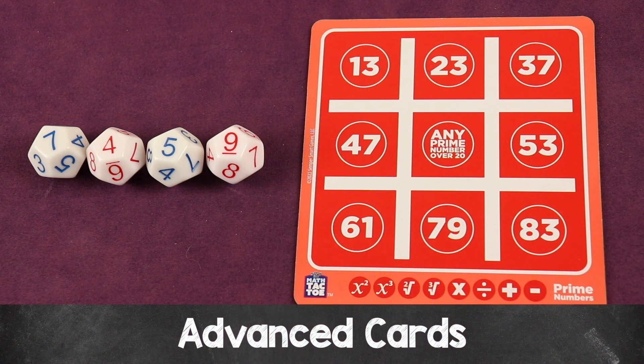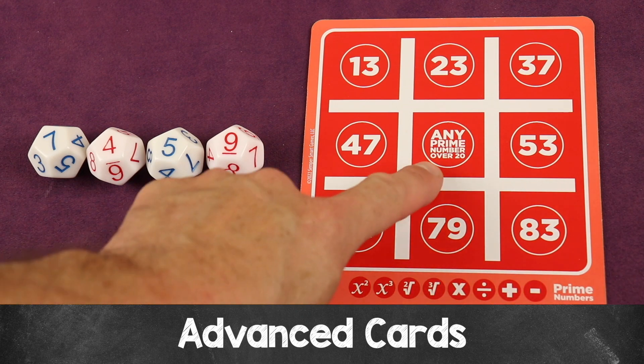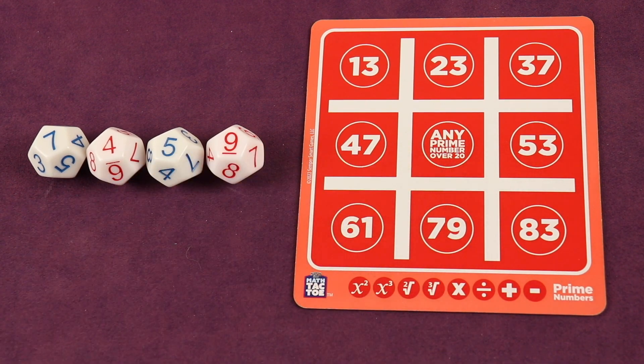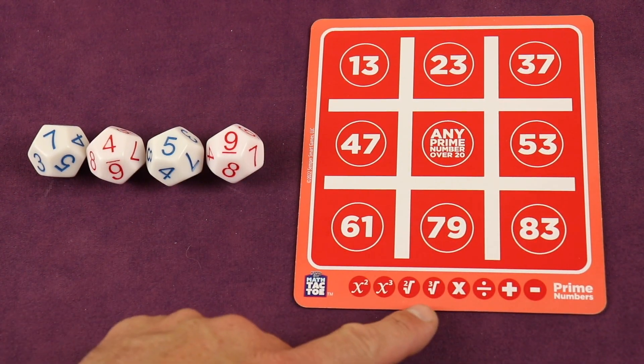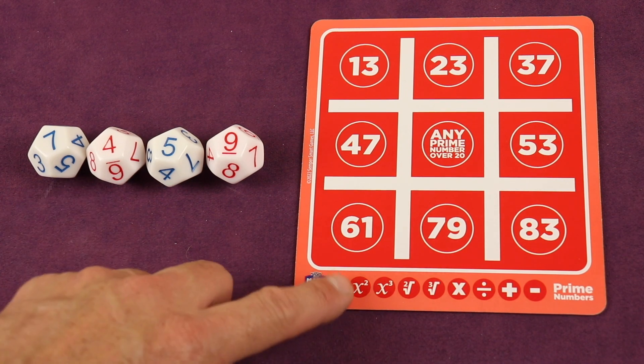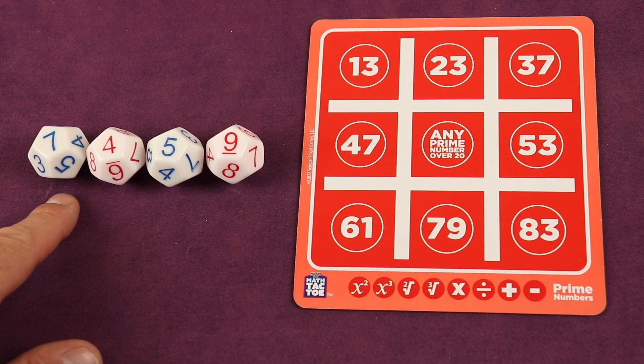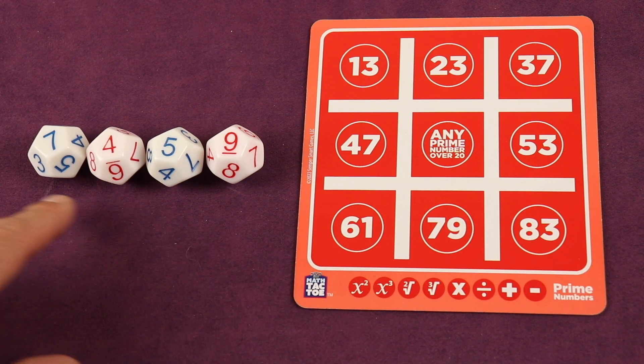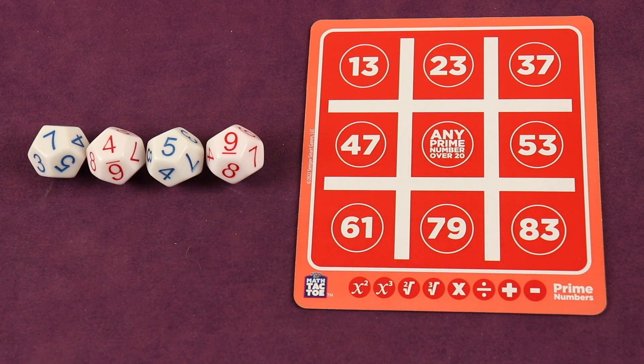Now on the advanced grid, these are all prime numbers. The middle is any prime number over twenty. So seven times nine is sixty-three, minus four is fifty-nine, you can go there for example. Keep in mind you have all these other operations as well. You could say seven squared, so that's forty-nine, then subtract the square root of four which is two—forty-nine minus two is forty-seven, we can go there.